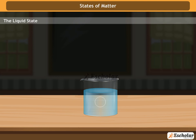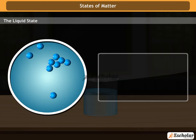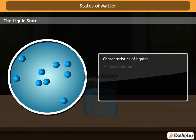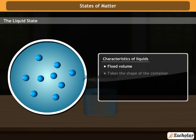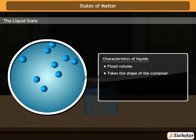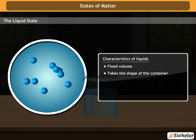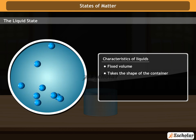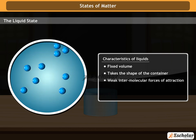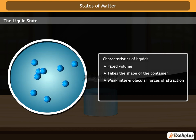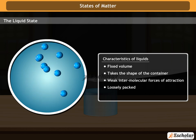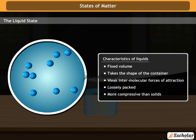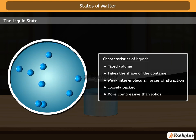Characteristics of Liquids: Liquids have a fixed volume, take the shape of the container in which they are kept, have weak intermolecular force of attraction, loose packing, and are more compressible than solids.